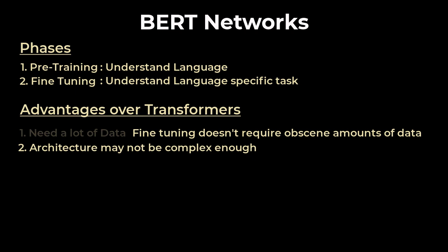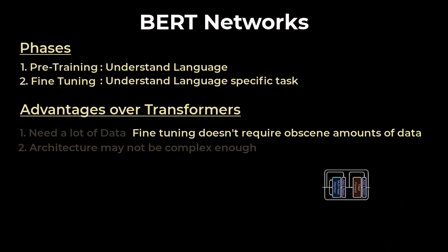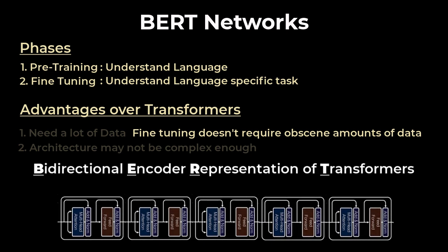The other concern was model complexity, which BERT also addresses. BERT models are a stack of transformer encoders, and they are called a bi-directional encoder representation of transformers. It's exactly what it is. It's bi-directional since it understands the context of words, looking both ways via attention. Encoder and transformer. Well, these words arise since BERT is essentially a stack of the encoder part of the transformer architecture.